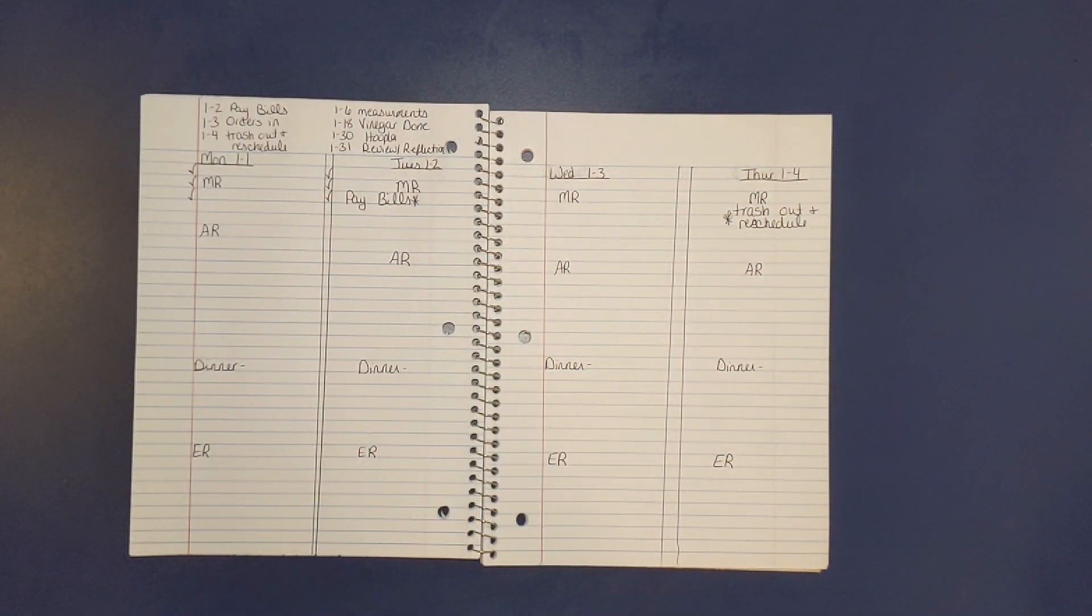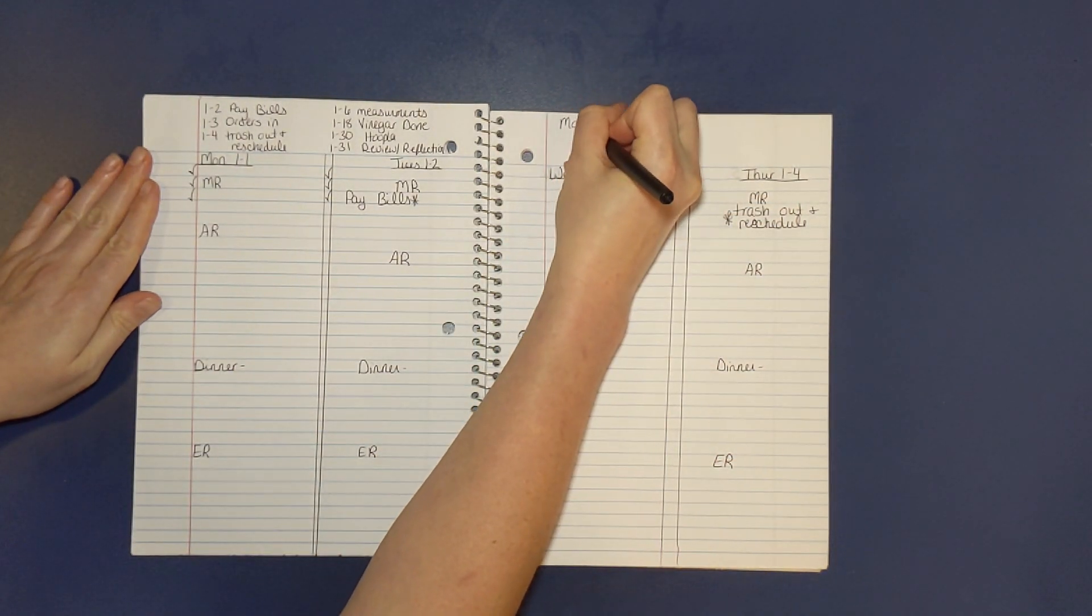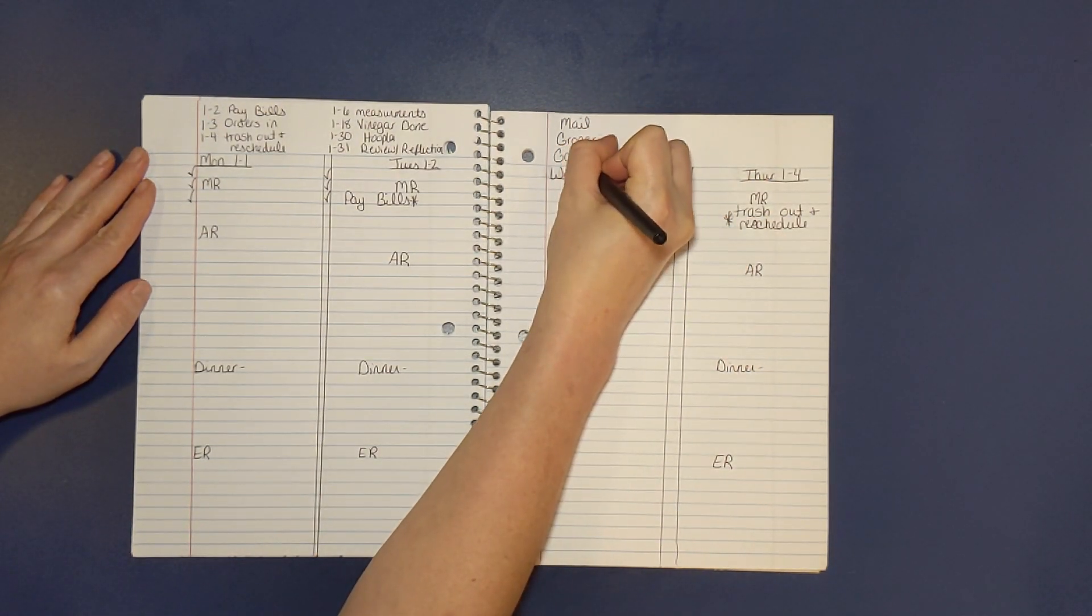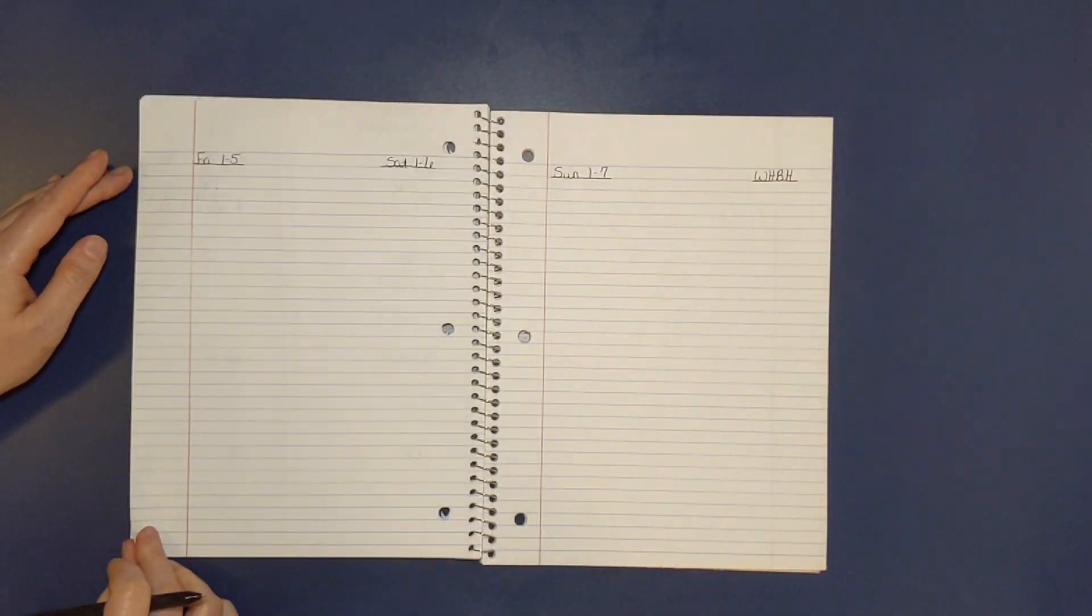At the top of this page, I write the things that I need to do this week, like mail some things, get groceries, and since it's the new year, I'm trying to prioritize my goals.